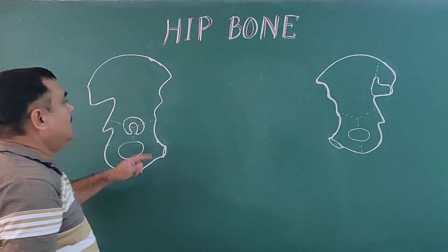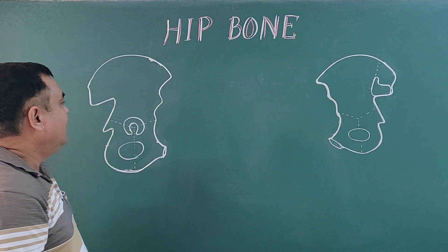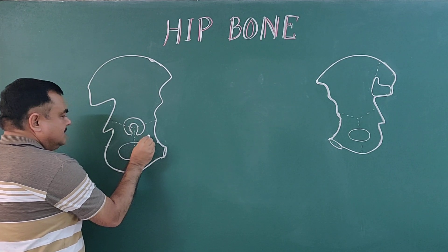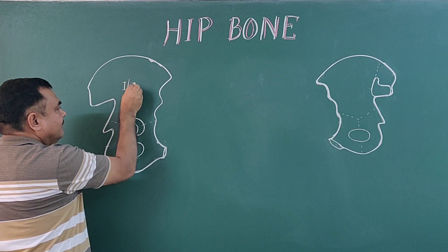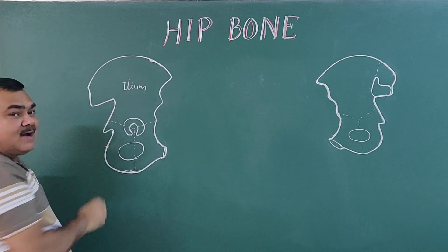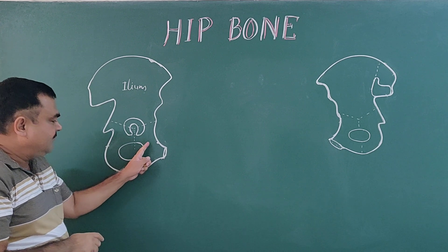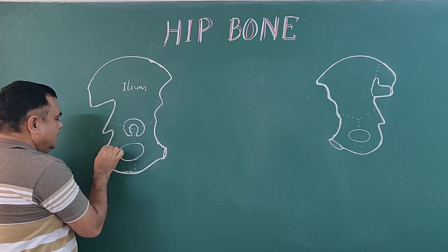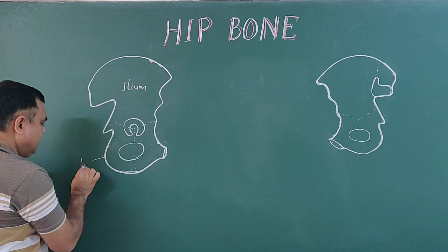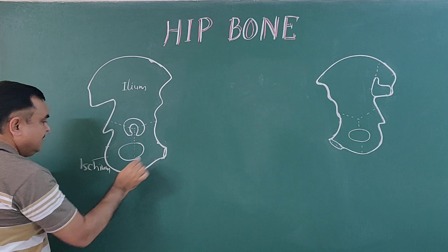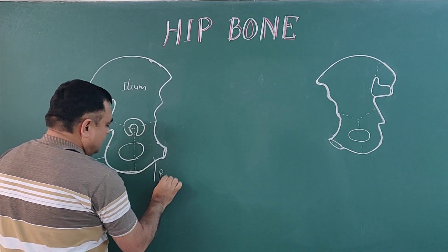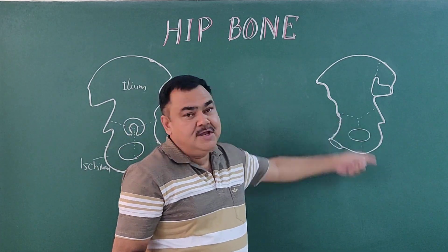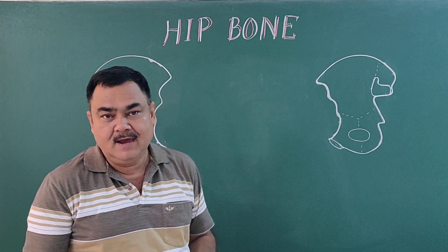Now we will discuss about the hip bone part 3. In this part we will discuss about the pubic bone. This is the ilium, which has been discussed in parts one and two. Now let us identify the pubic bone and ischium. This is ischium and this is pubic. Here is the lateral view, and here is the medial view — the inner and outer aspect of the hip bone.